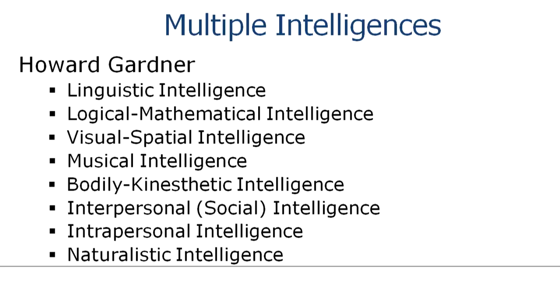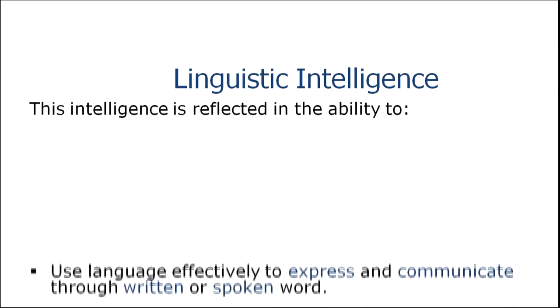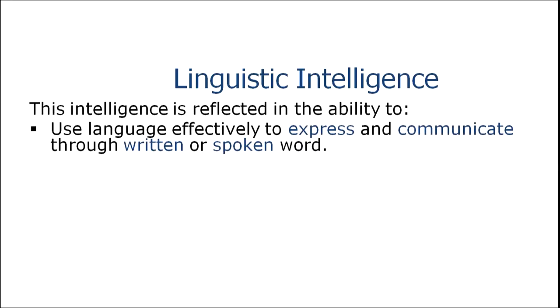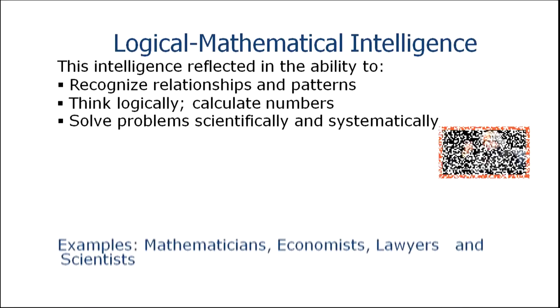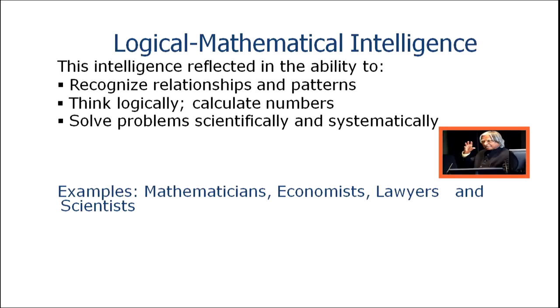The first type is linguistic intelligence — the ability to use language effectively to express or communicate through written or spoken word. Poets, writers, orators, and comedians generally have good linguistic intelligence. The second type is logical-mathematical intelligence — the ability to recognize relationships and patterns, think logically, calculate, and solve problems scientifically. It is generally found in mathematicians, economists, lawyers, and scientists, who are good at analyzing data and playing strategy games like chess.